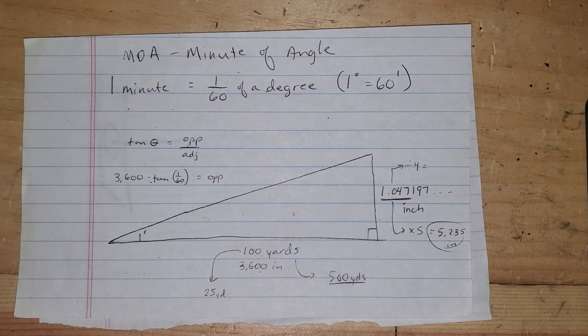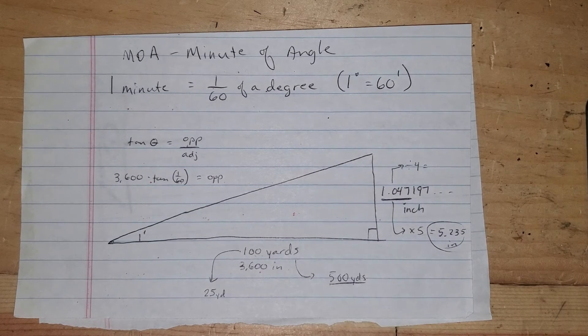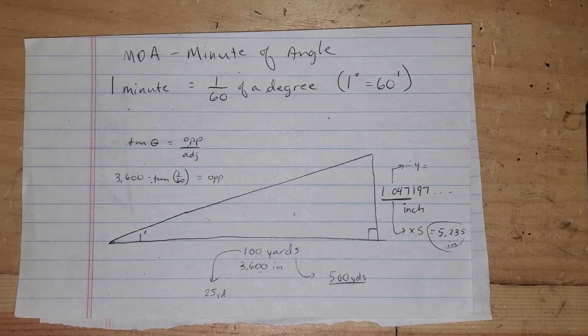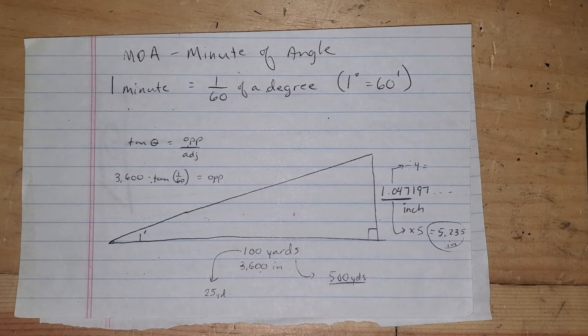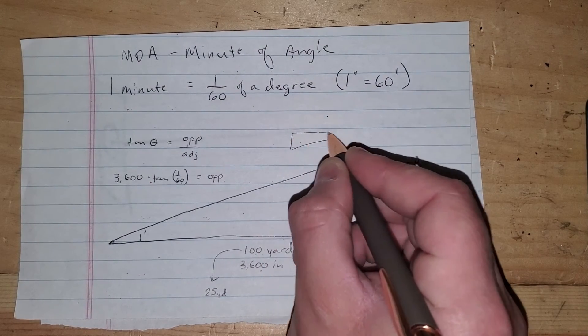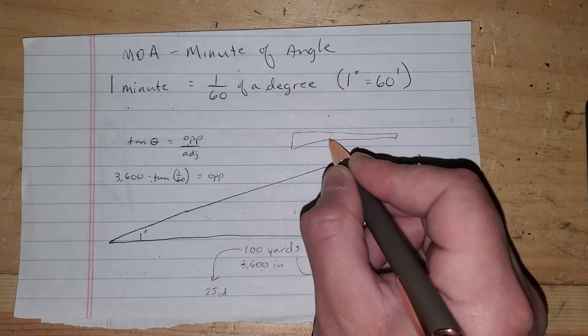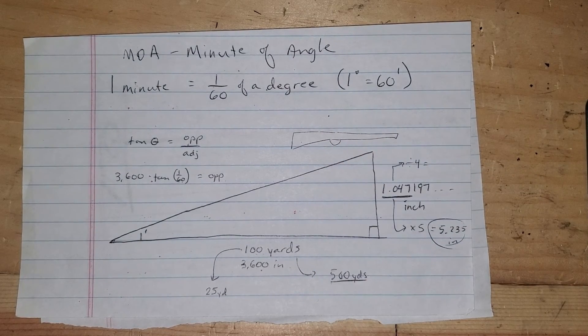So anyway, that's what MOA means. And the last piece I want to add to this is they sell a thing for rifles called a 20 MOA rail. And the way a 20 MOA rail works is if you've got your rifle, I'm going to attempt to draw a rifle poorly here. There, there's your rifle.